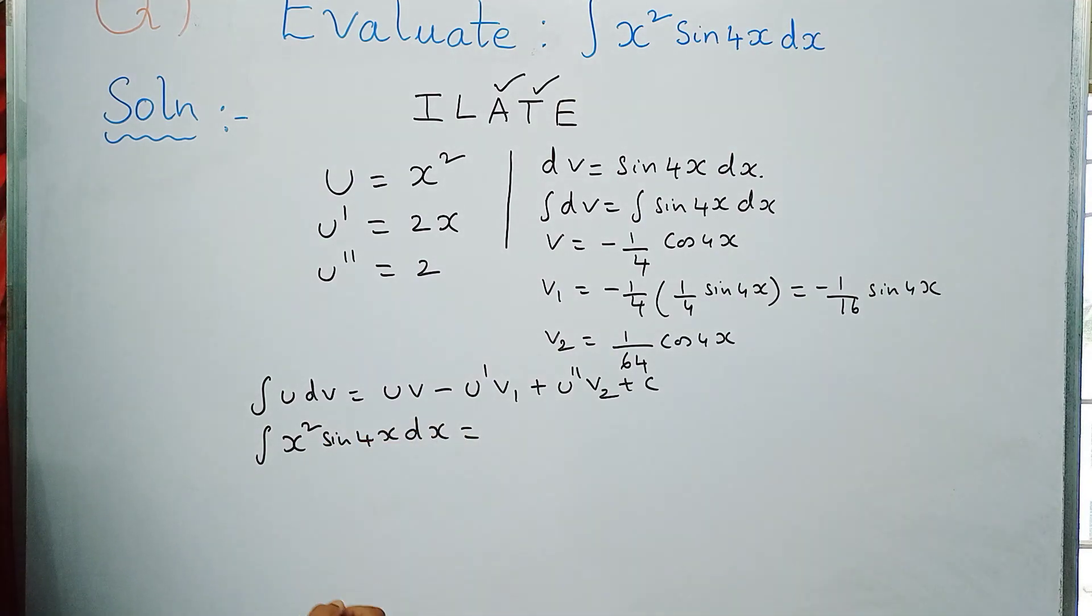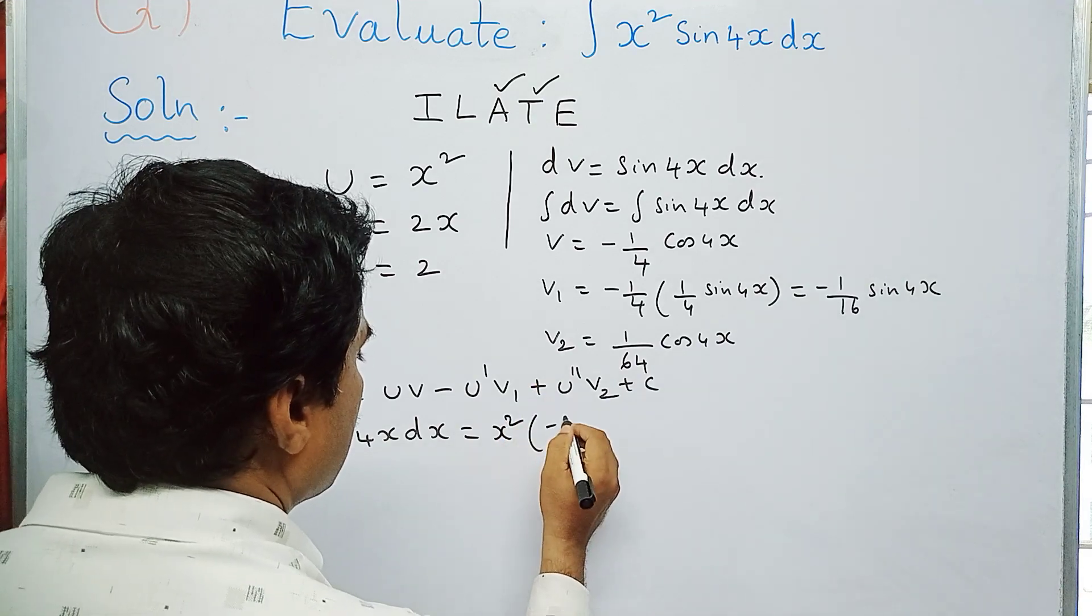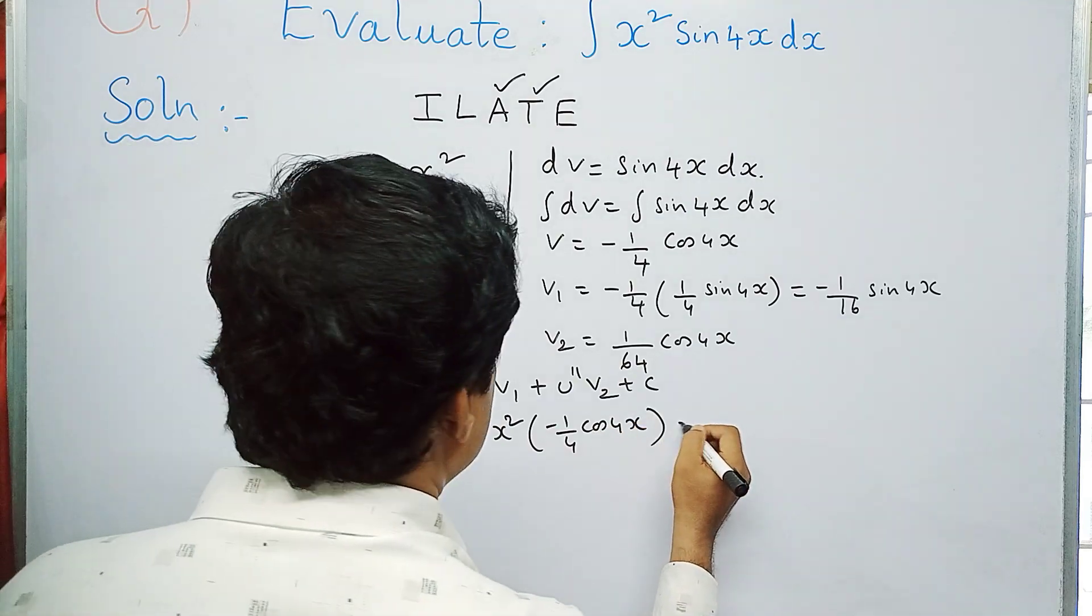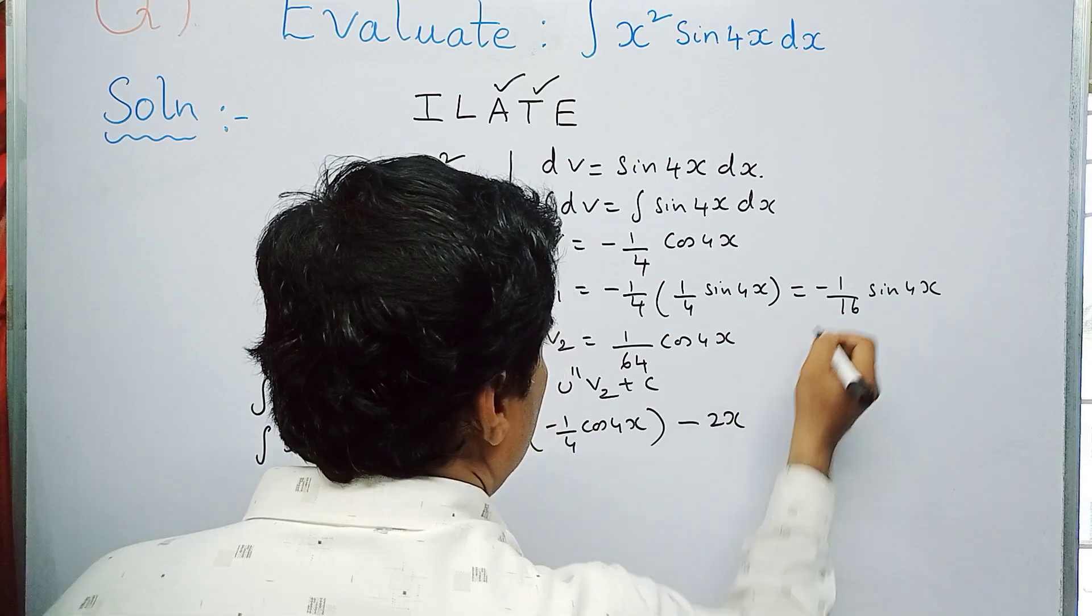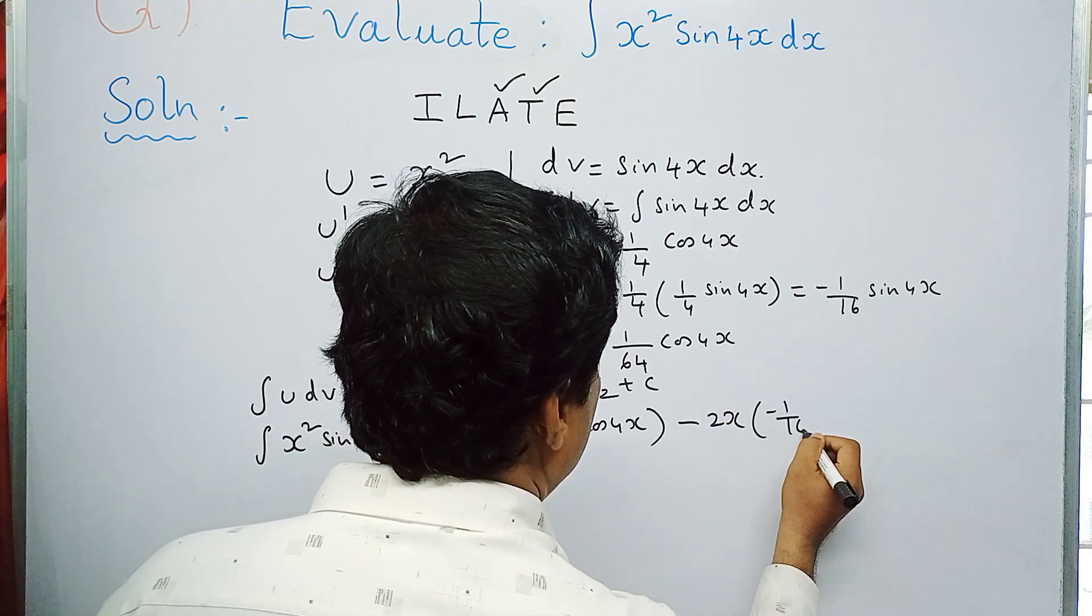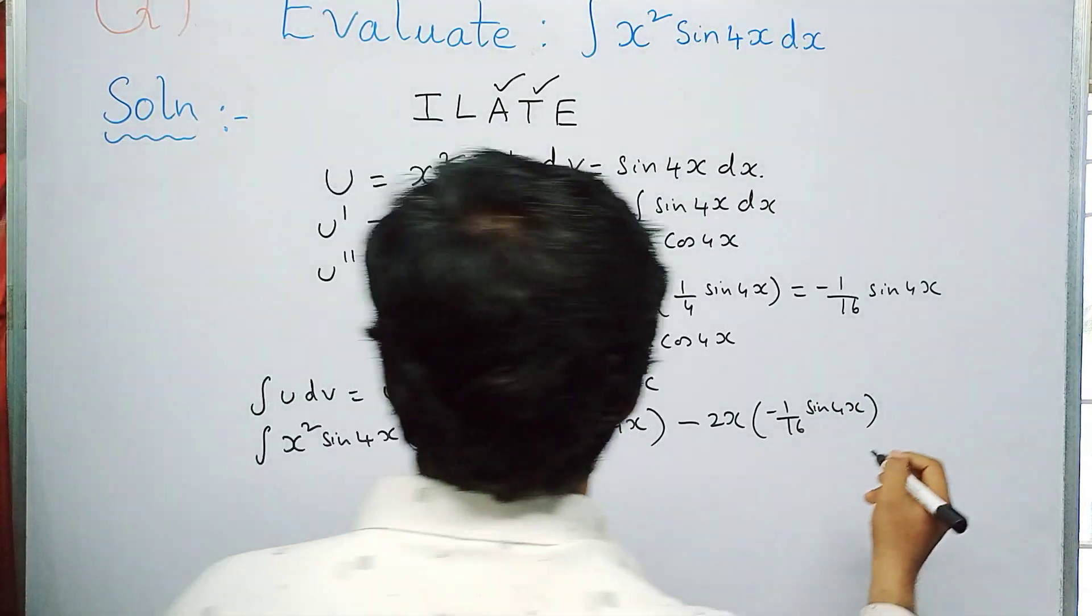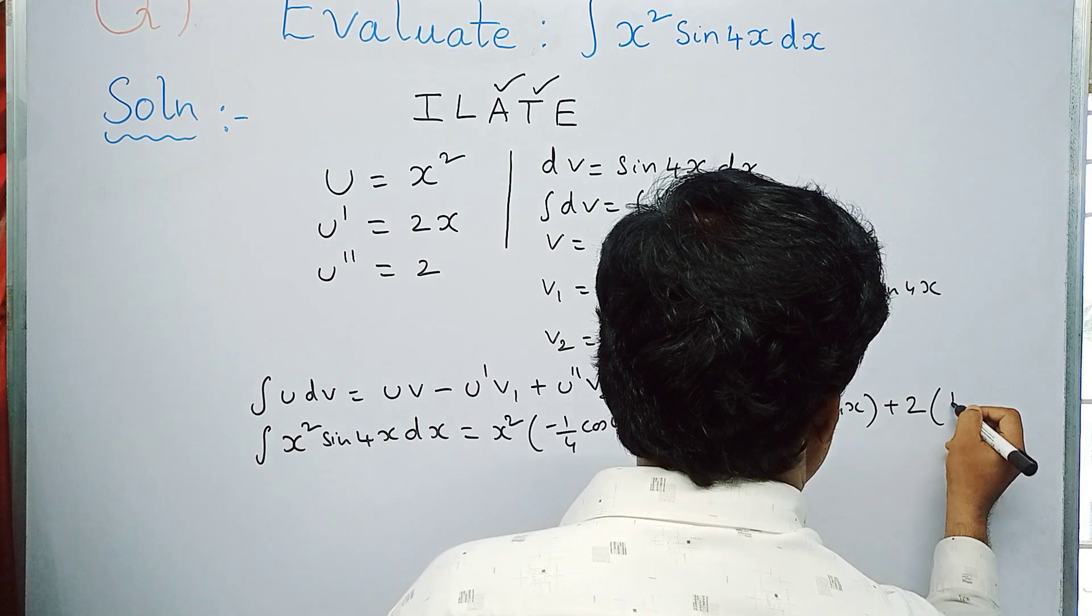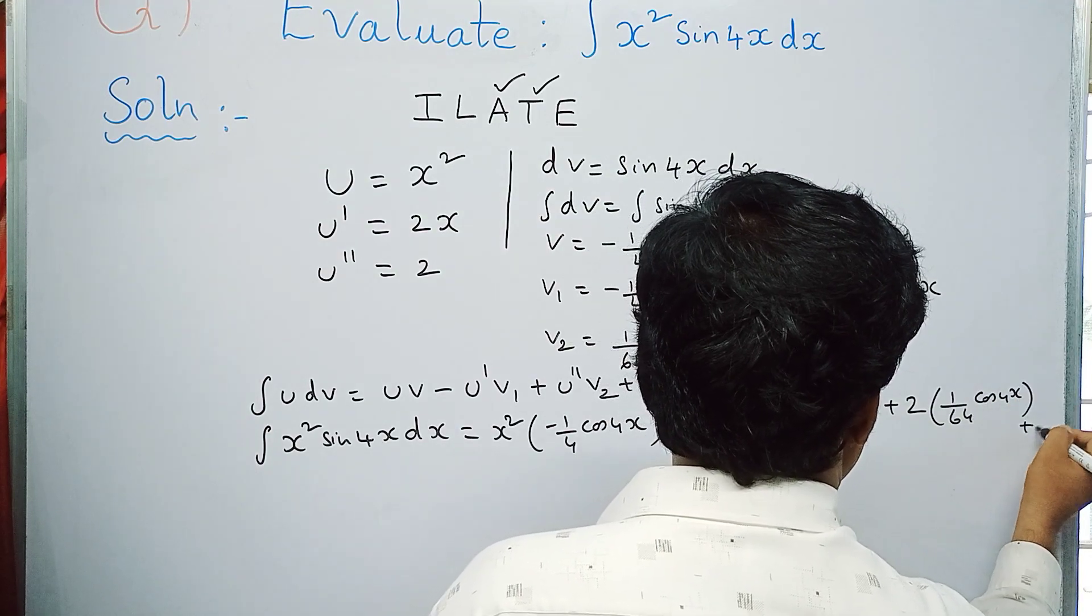Now u into v—what is u here? U is x square and v is minus 1 by 4 cos 4x, minus u dash. What is u dash? U dash is 2x and v1 is minus 1 by 16 sine 4x. And here plus u double dash, that is 2, into v2 is 1 by 64 cos 4x plus c.